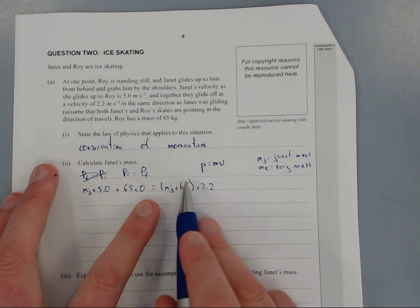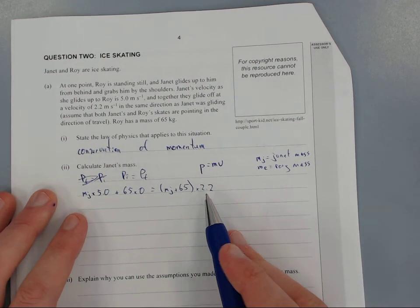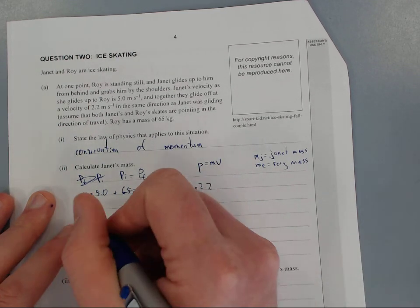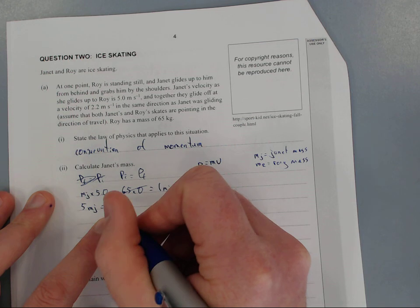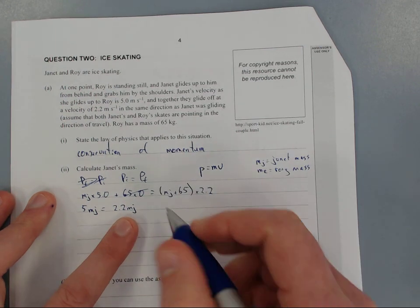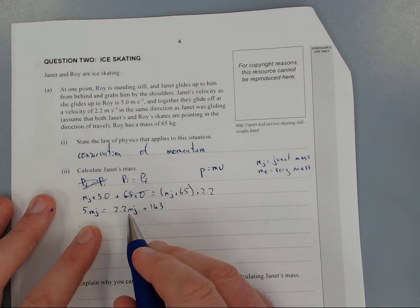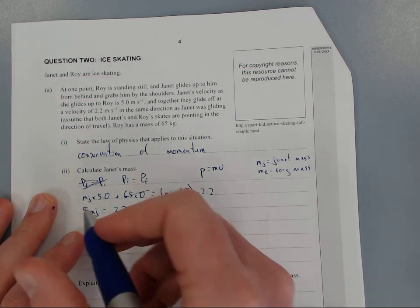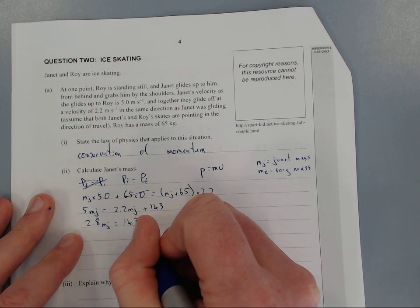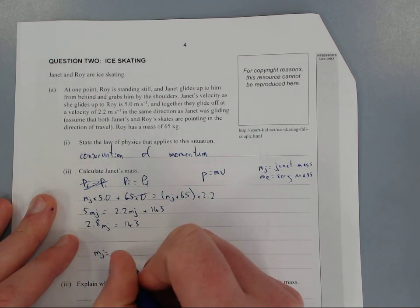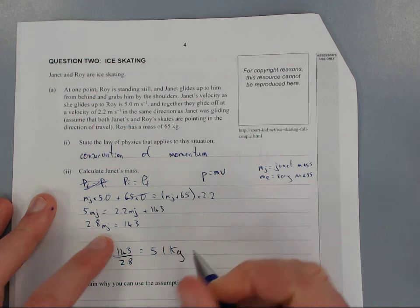This is just simple linear algebra. Cancel that out. 5 MJ equals 2.2 MJ plus 143. Move 2.2 to the other side by subtracting from both sides. So 2.8 MJ equals 143. Janet's mass equals 143 divided by 2.8, which equals 51 kg.